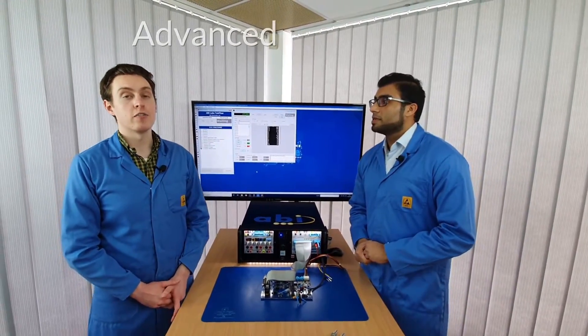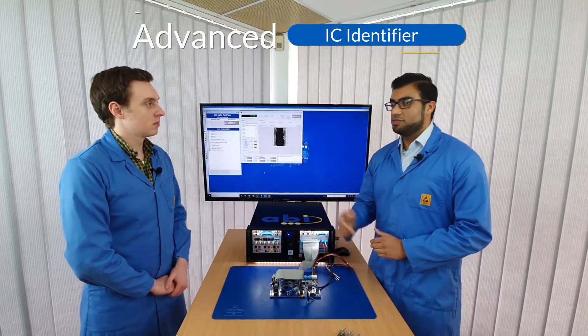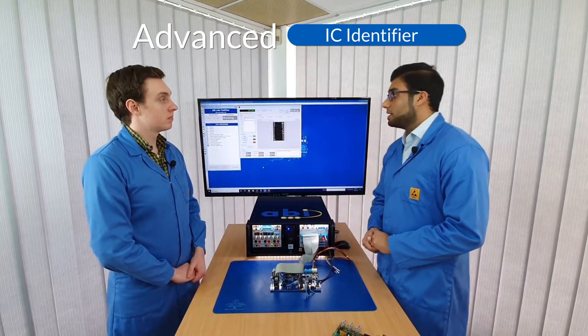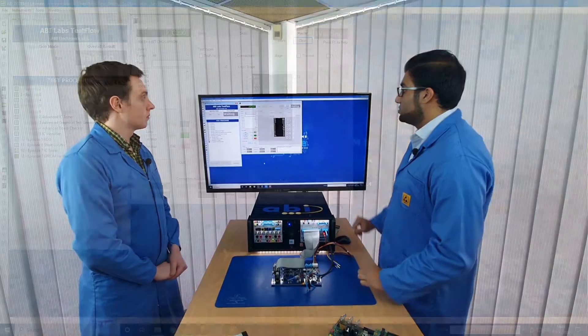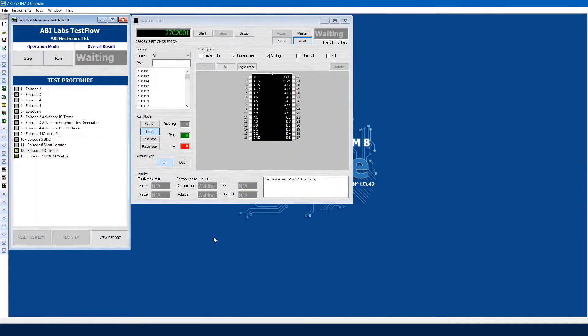Just like we did on the advanced IC identifier, which you can also watch. Exactly, which makes use of the video cable as well. Within the digital IC tester we have our EEPROM, which is a CMOS EEPROM. We're doing a connection and voltage test. We're going to check all the signals coming in and check the voltages to make sure our device is stable before moving on into the EEPROM Verifier test.